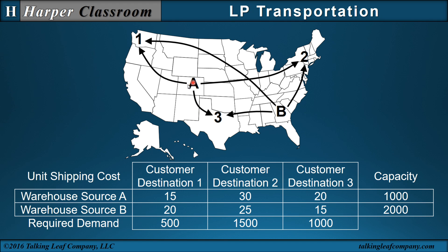If I have one large shipment from A to 1 — from Denver to Seattle — the average unit shipping cost would be $15 per computer. But the same shipment from Denver to Albany, New York, from A to 2, would be $30 per computer. This leads to the business question: how many do I ship from A and B to 1, 2, and 3 so I do not exceed my capacity, I meet my demand, and minimize my shipping cost? That's the transportation LP.